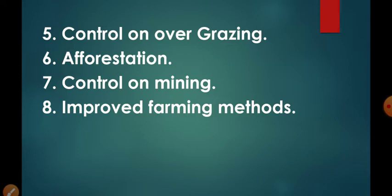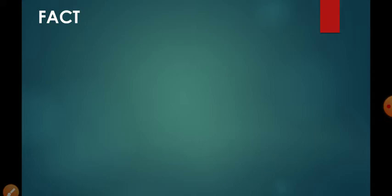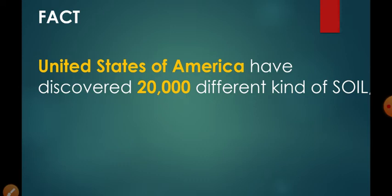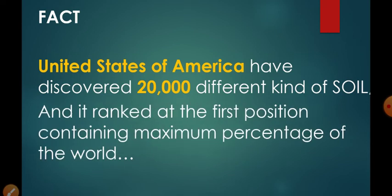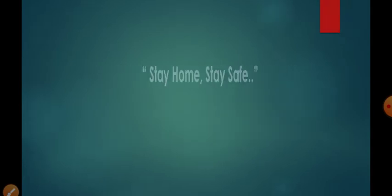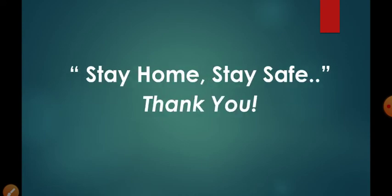Other preventive measures include control on overgrazing, afforestation, control on mining, and improved farming methods. That was all for today's lecture. Here is an interesting fact related to this chapter: the United States of America has discovered 20,000 different kinds of soil, while you have studied only six types in your NCERT book. The USA also ranks first in containing the maximum percentage of the world's soil types. That's all for today. Hope this video is helpful for you. Thank you. Stay home, stay safe.